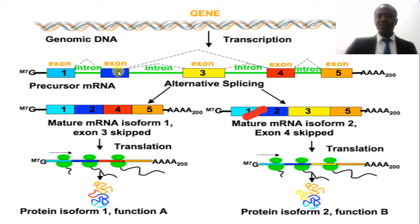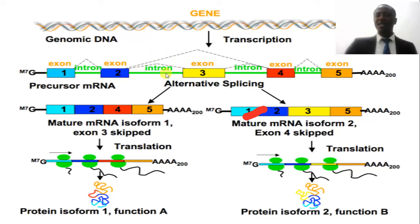Therefore we need to separate or remove these introns from the exons, since they should not be joined when we are making our proteins. If they are left like this, they end up giving some complications and some phenotypes that are not necessary in an organism, so they need to be removed.